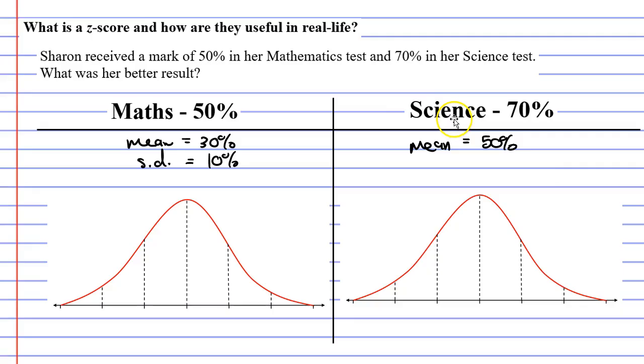we can look at it and go, well, she actually scored 20% more than the mean in her science test, and 20% more than the mean in the maths test. So now, all of a sudden, it looks like these test results are equivalent to each other. A 70% in science is equivalent to a 50% in maths. Maybe the maths test was harder than the science test. But we actually need to delve even deeper than this.